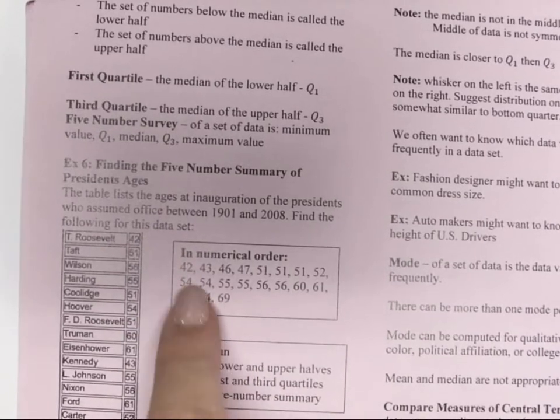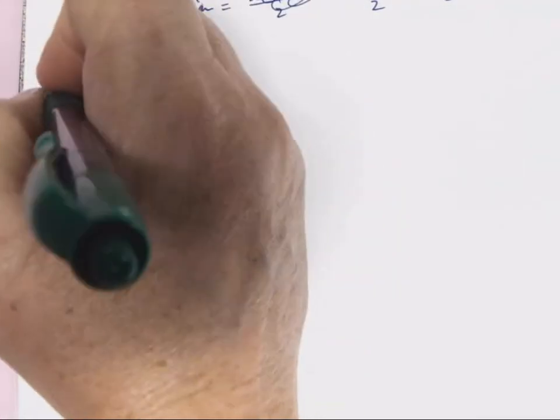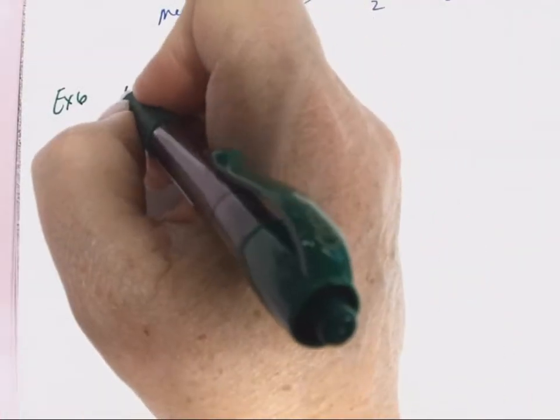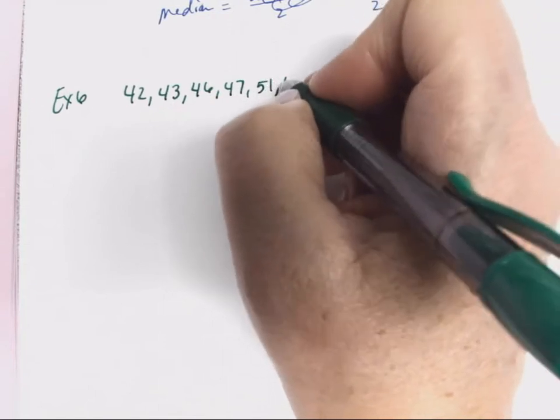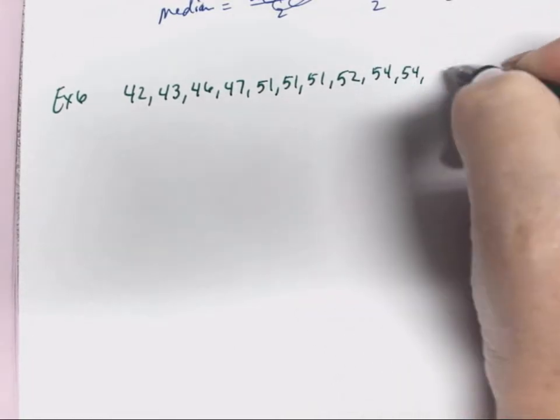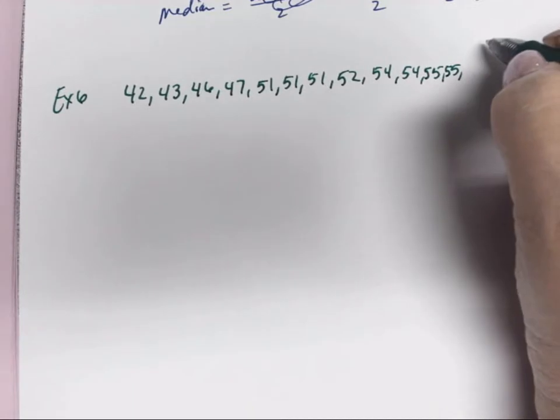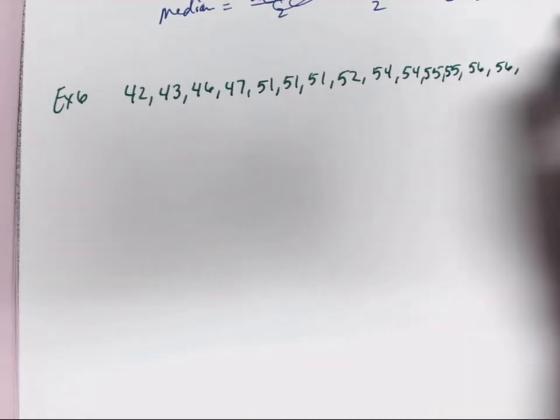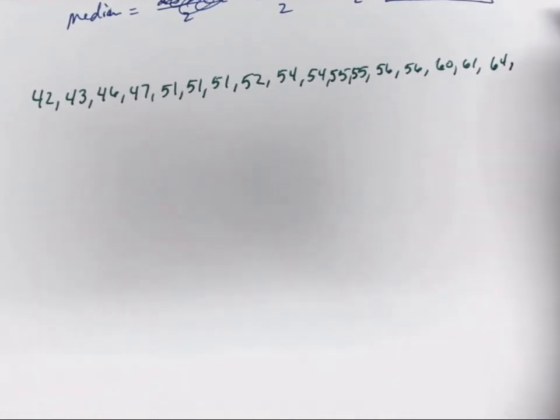We're going to use that to find the five-number summary of president's ages. The table lists the ages at inauguration of the presidents who assumed office between 1901 and 2008. We're going to find the median, the lower and upper halves, the first and third quartile, and the five-number summary. I've gone ahead and put them in numerical order to make it easier for us. This will be example six, and I'm going to write all the numbers in order. So 42, 43, 46, 47, 51, 51, 51, 52, 54, 54, 55, 55, 55, 56, 56, 60, 61, 61, 64, and 69.